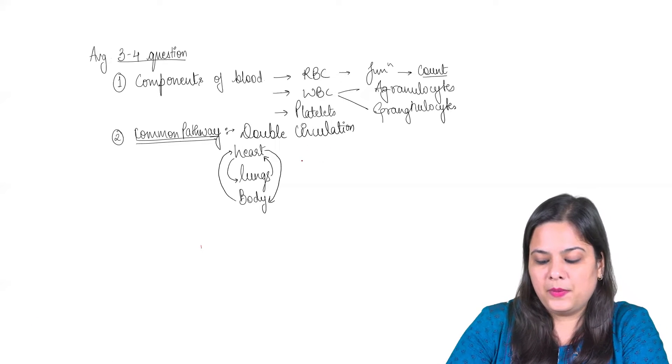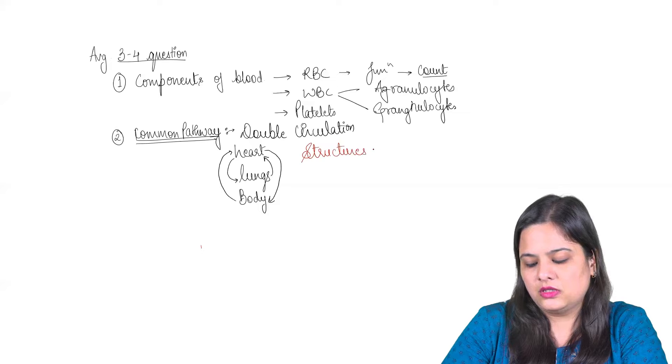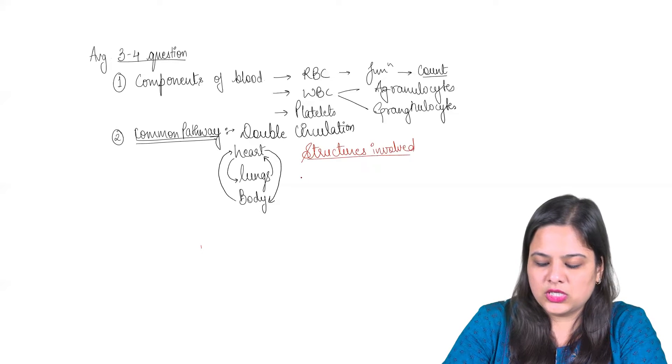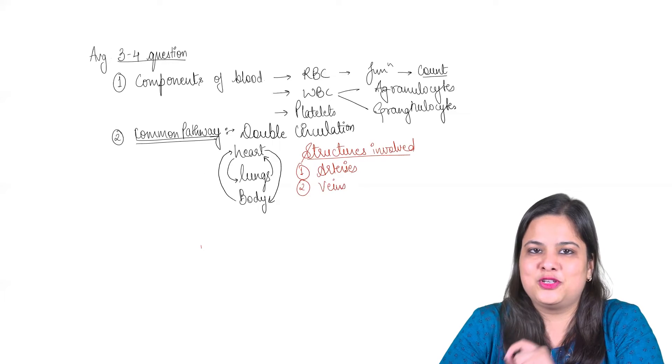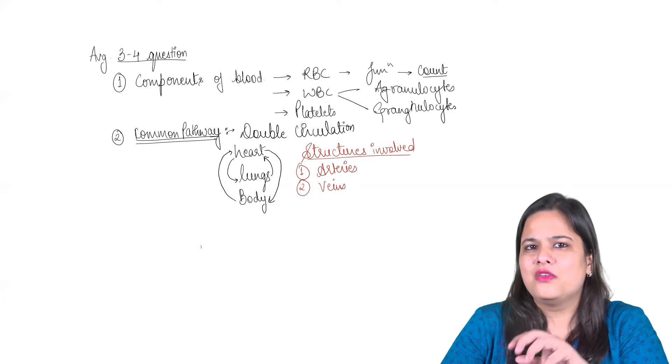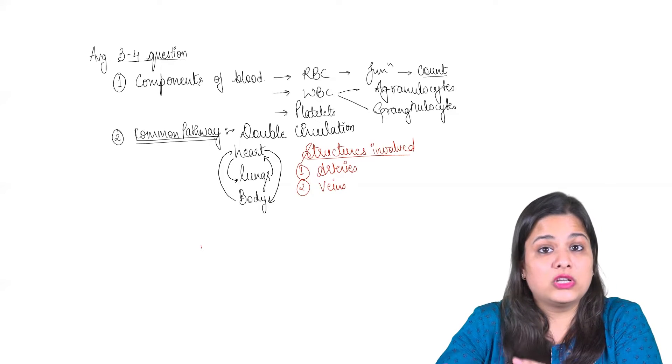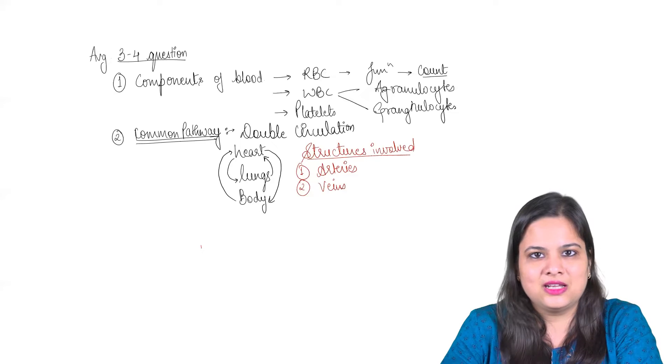Now, apart from this, of course, here come the structures that are involved. Structures involved. The most common question asked first is which arteries are taking part and veins. And of course, the most important exception of pulmonary artery and vein. Very easy, very simple question. But many times, we over judge, we over analyze the question, and because of this we make small mistakes.